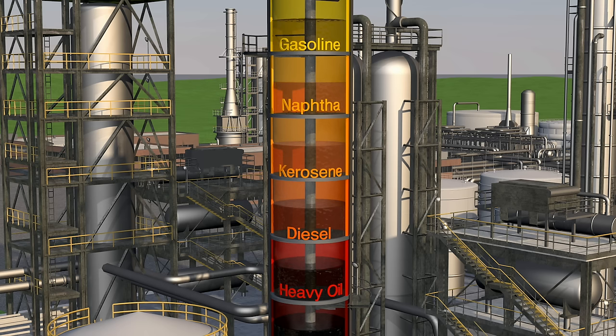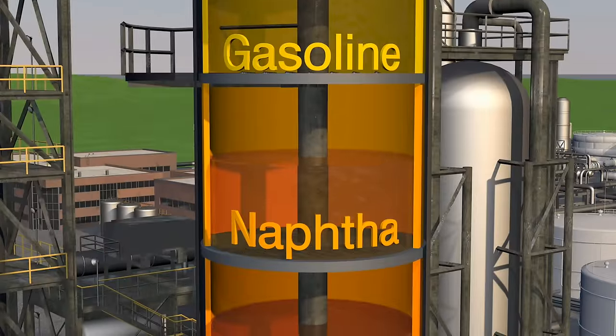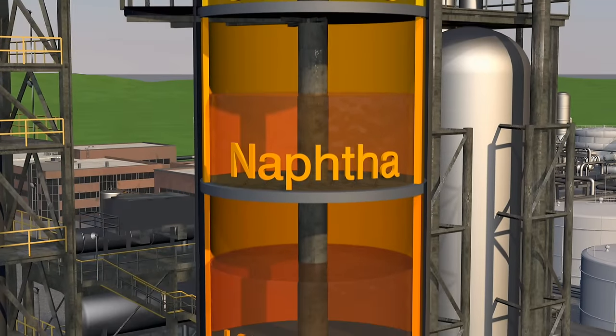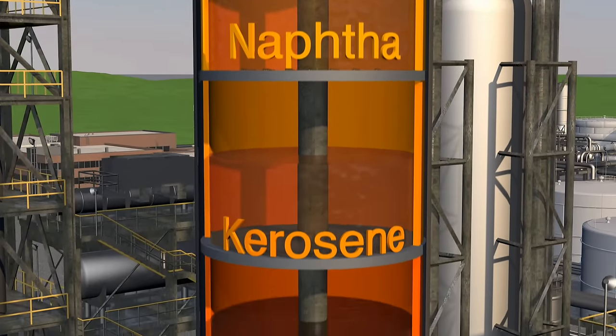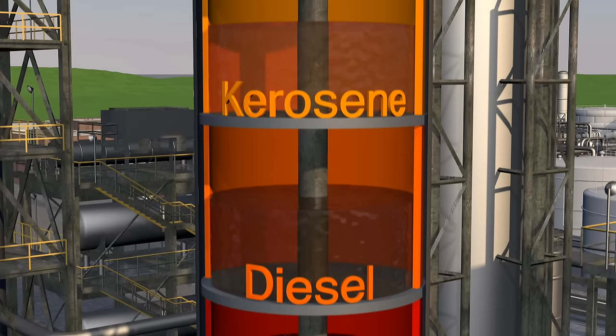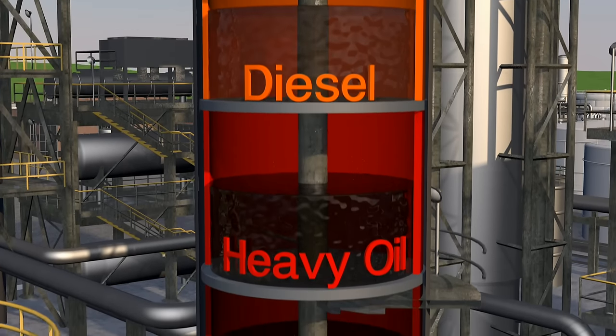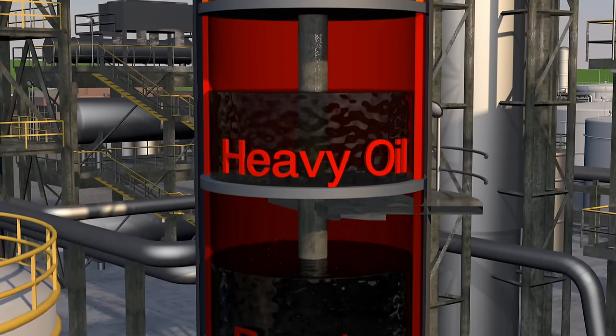Using stacks of trays, the liquid is easily collected and separated by weight. The lighter and medium weight liquids require less processing before they're ready to be used in cars and trucks. The heavier liquids need more processing to become useful.